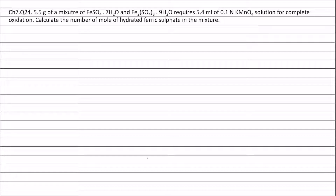The oxidation number of iron in FeSO4·7H2O is +2, and the oxidation number of iron in Fe2(SO4)3·9H2O is +3. Therefore, KMnO4 will oxidize the iron present in FeSO4·7H2O from the +2 oxidation state to the +3 oxidation state.